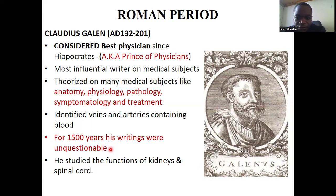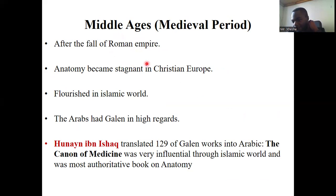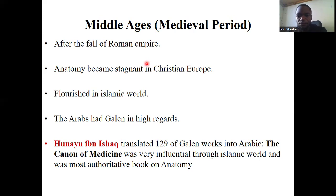Most of his writings were not accurate, but people were not interested in going against him because people would still side with Galen. He theorized on many medical subjects — coming up with theories in anatomy, physiology, pathology, and symptomatology — but most were challenged much later. After Galen, there is a period called the medieval period, also known as the dark age in science. After the fall of the Roman Empire, there was a lot of persecution of scientists, who were considered a threat to authority.